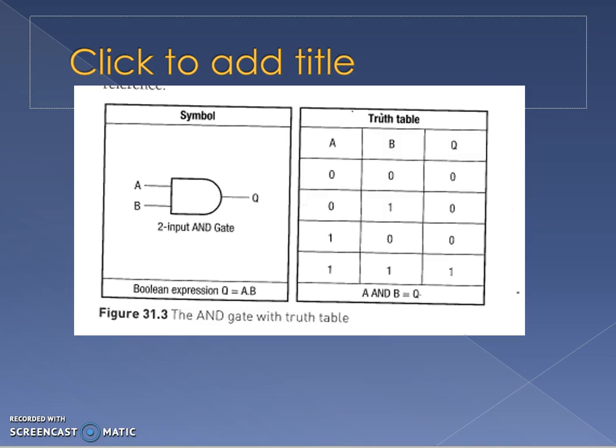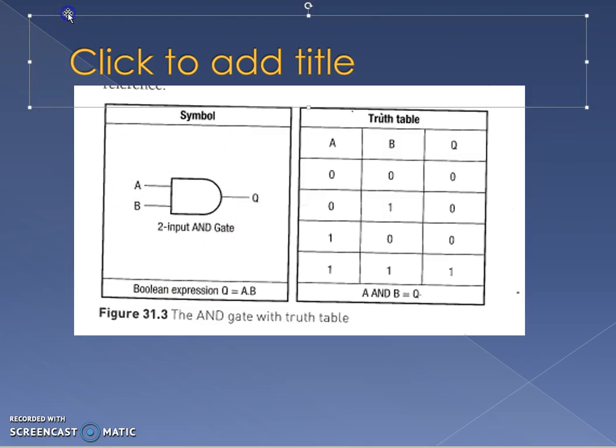So the truth tables for each. Here then is the AND gate. The AND gate is showing that we have A and B as inputs, and the result Q. Q equals A and B. And here is the truth table. So the only time we get a 1 in the queue is when we have a 1 and a 1.